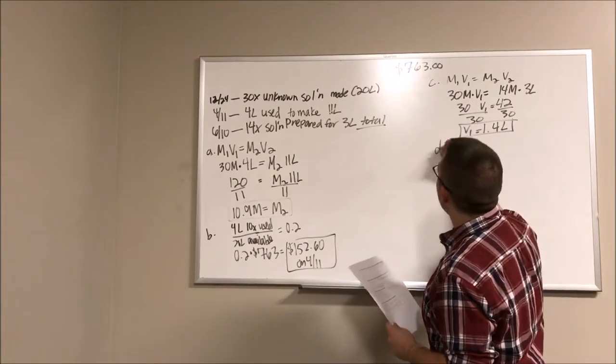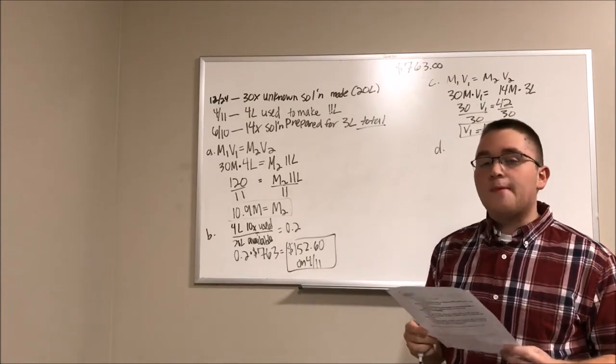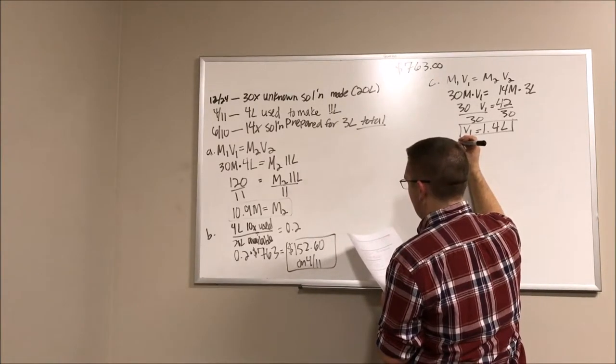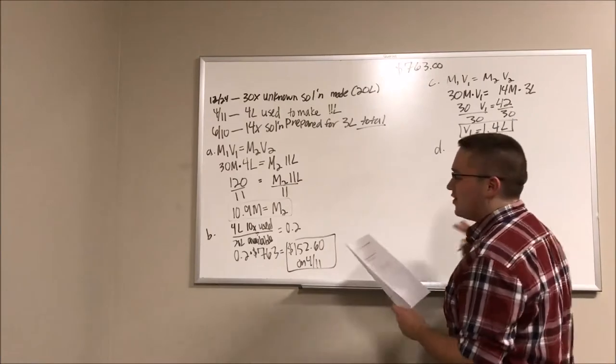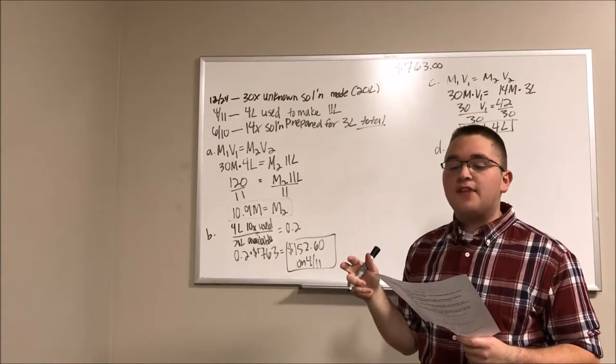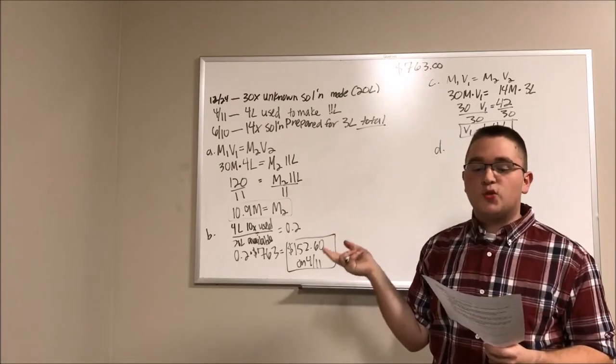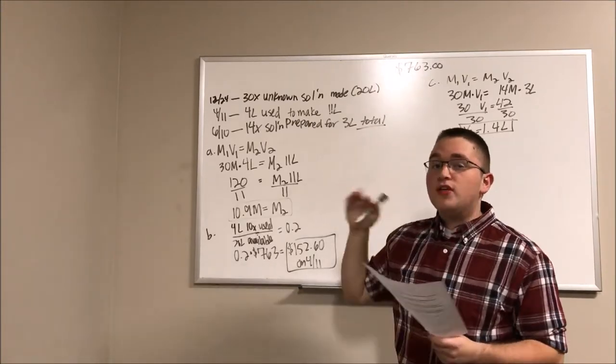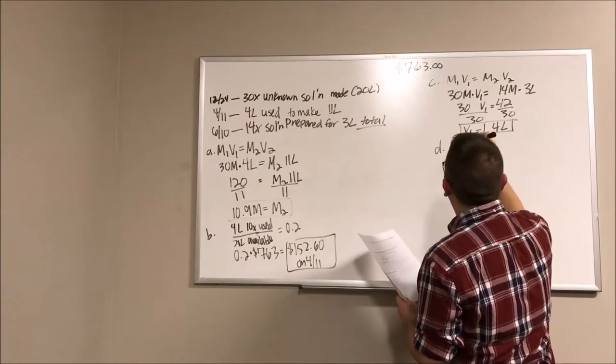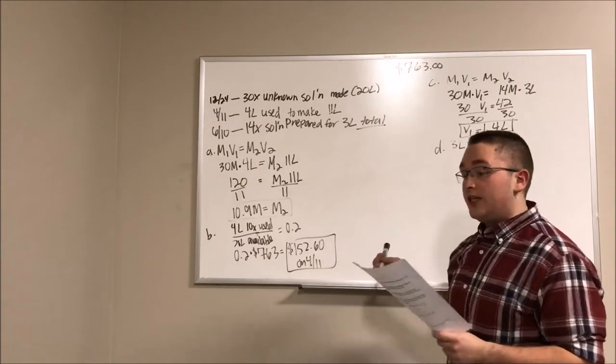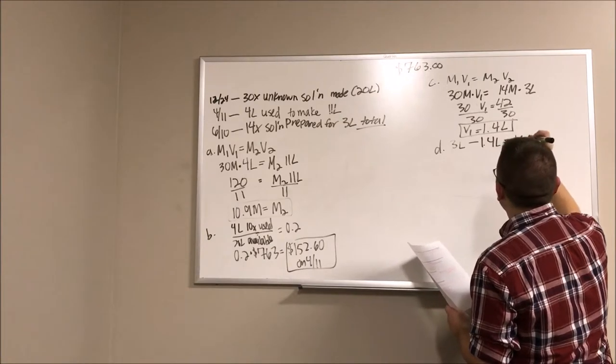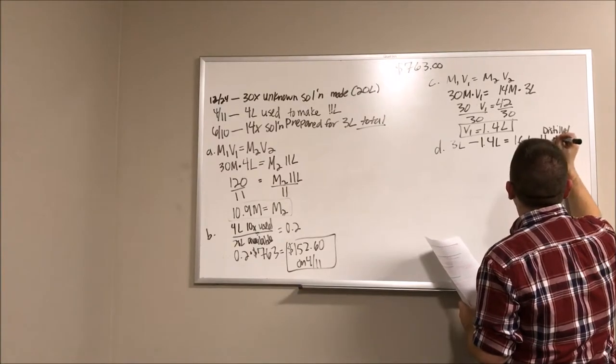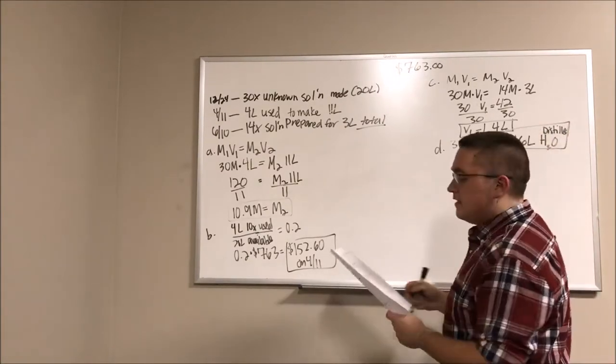That's all we need to know for that one. And then number four, we're actually going to be utilizing the information that we just calculated to determine how much distilled water we are going to need. So we just created three liters total that's given to us, right? So we created three liters, and we know that 1.4 liters of that is our solution. So simple math tells us that 1.6 liters is going to be our distilled H2O. Easy peasy, lemon squeezy.